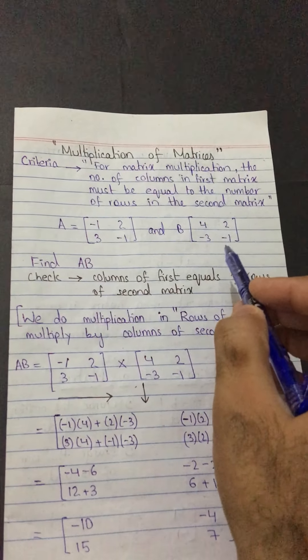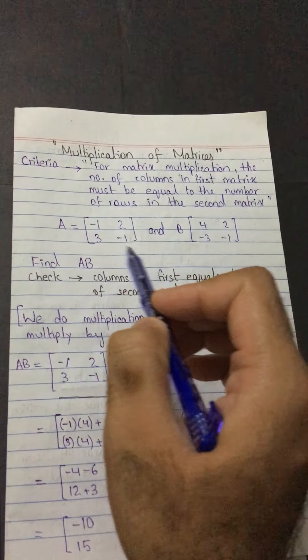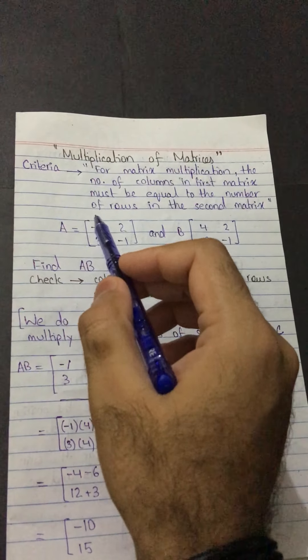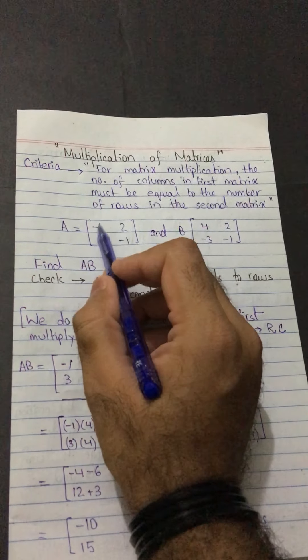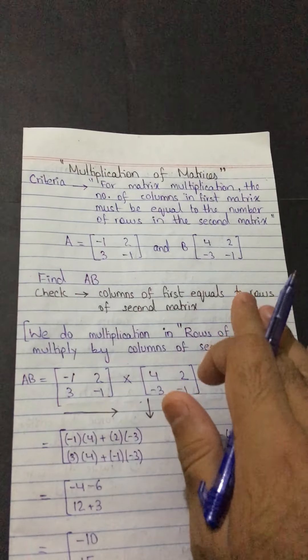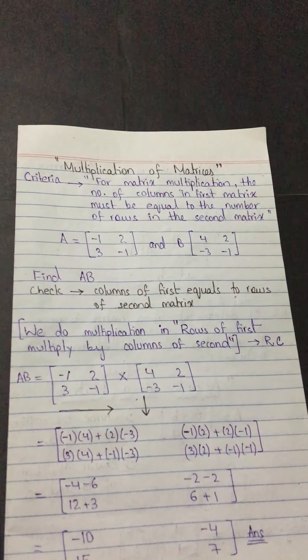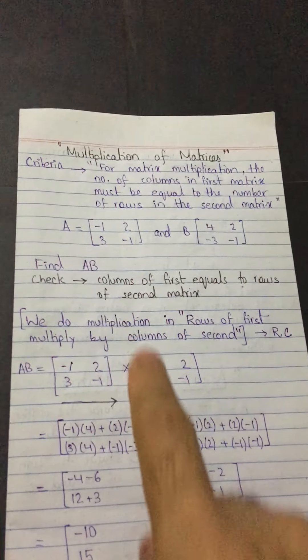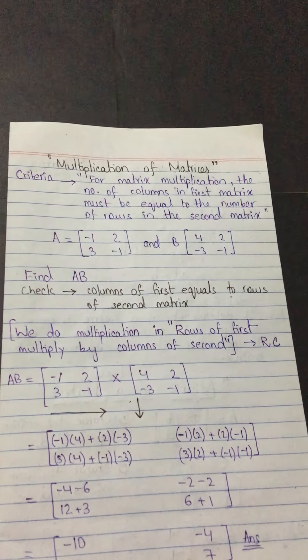For example, we have matrix A: [−1, 2; 3, −1] and matrix B: [4, 2; −3, −1], and the question asks us to find A multiplied by B. We check the criteria first: matrix A has two columns, and matrix B has two rows. The number of columns of the first equals the number of rows of the second, so the criteria is fulfilled and they can be multiplied.